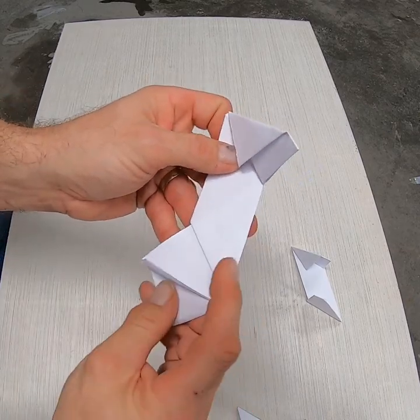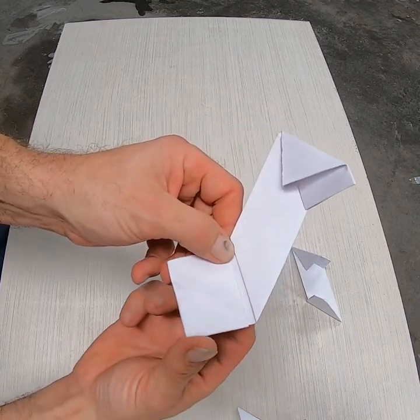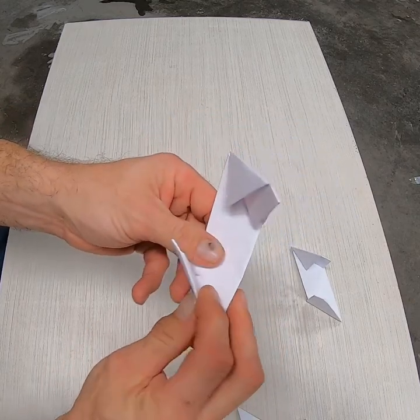So again, we've got two pieces. So to do that again, fold this part up, end of the triangle, and then on itself.